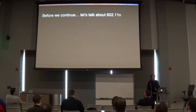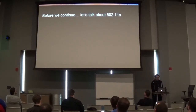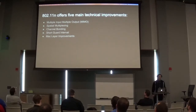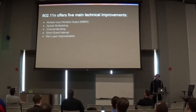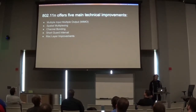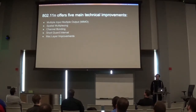Before we continue, let's talk a bit more about 802.11n itself. There are five main technical improvements offered by 802.11n. The first is Multiple Input and Multiple Output, or MIMO. They also have spatial multiplexing, channel bonding, a really short guard interval, and some MAC layer improvements. We're primarily going to stick to the first three because of time and relevance.